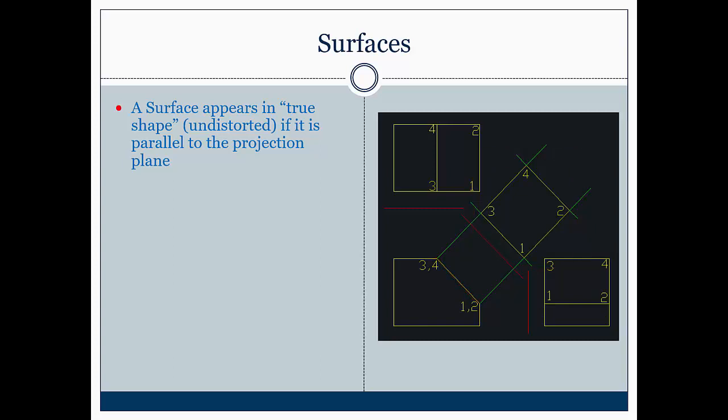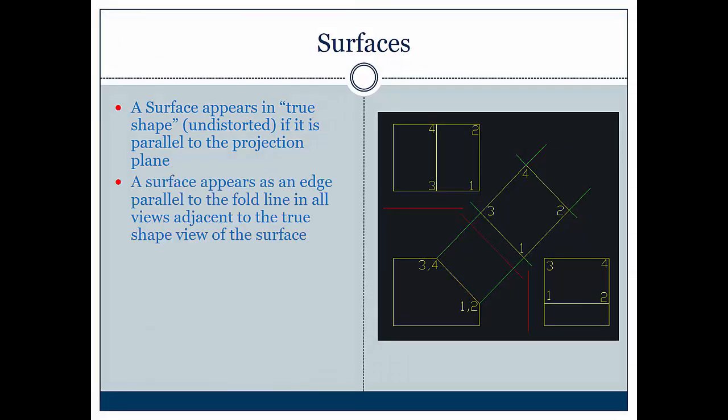A surface appears as an edge parallel to the fold line in all views adjacent to the true shape of the surface. So this surface, once again, can be seen as an edge right here in my front view. If any line on the surface appears as a point, then the surface will appear as an edge. This goes back to the idea that lines are points whenever we see them from a specific angle.